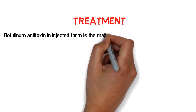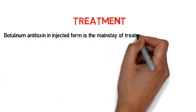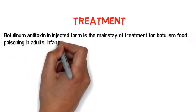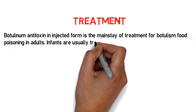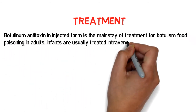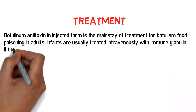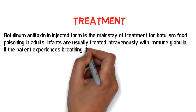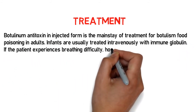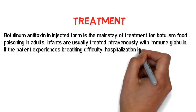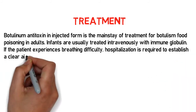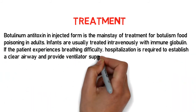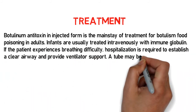How is botulism food poisoning treated? Botulinum antitoxin in injected form is the mainstay of treatment for botulism food poisoning in adults. Infants are usually treated intravenously with immune globulin. If the patient experiences breathing difficulty, hospitalization is required to establish a clear airway and provide ventilator support.